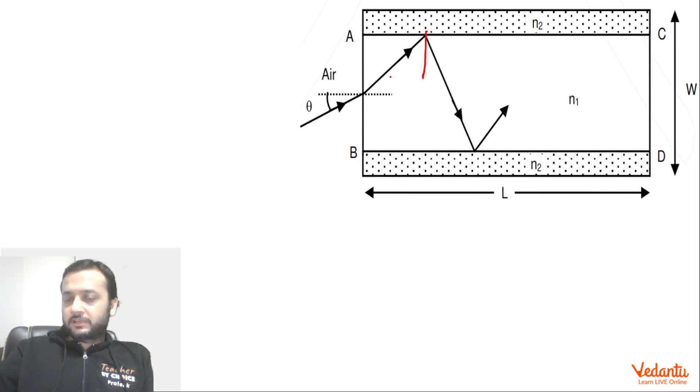So you should think carefully that we want the ray to travel as much distance as possible. Ideally we would have wanted the ray to travel like this, it should keep on traveling, in that case the time will become infinite. But we also want that the angle should be greater than or equal to critical angle.